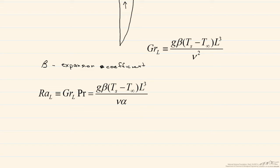So this number is used to determine the transition, the Rayleigh number, from laminar to turbulent flow. If the Rayleigh number is greater than 10 to the 9th, we have turbulent flow.